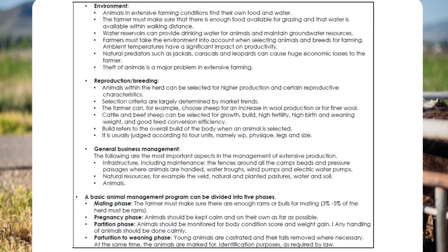Environment: animals in extensive farming conditions find their own food and water. The farmer must make sure there is enough food available for grazing and that water is available within walking distance. Water reservoirs can provide drinking water and maintain groundwater resources. Farmers must take the environment into account when selecting animals and breeds. Ambient temperatures have a significant impact on productivity. Natural predators such as jackals, caracals, and leopards can cause huge economic losses. Theft of animals is also a major problem in extensive farming.